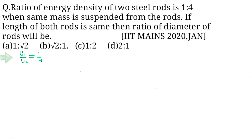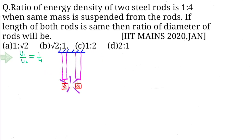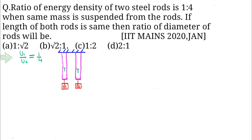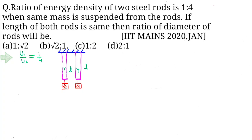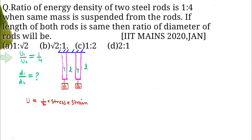According to the question, u1 by u2 is 1 by 4. Suppose two steel rods have the same mass attached — since both are steel rods, the Young's modulus value is the same, that is Y. According to the question, length is also the same, and we have to find the ratio of diameters d1 by d2.